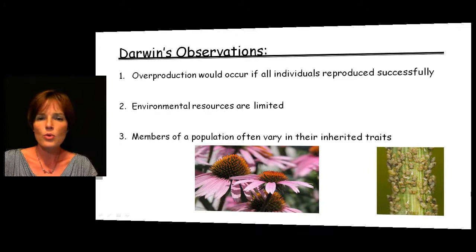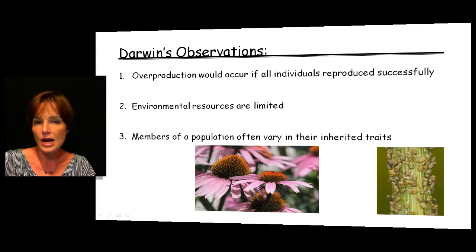We're all very aware that within the human population there's a lot of variety. One of the keys here is that this is not only variety but inherited variety. If it's inherited, this is variety that can then be passed on to offspring as well.